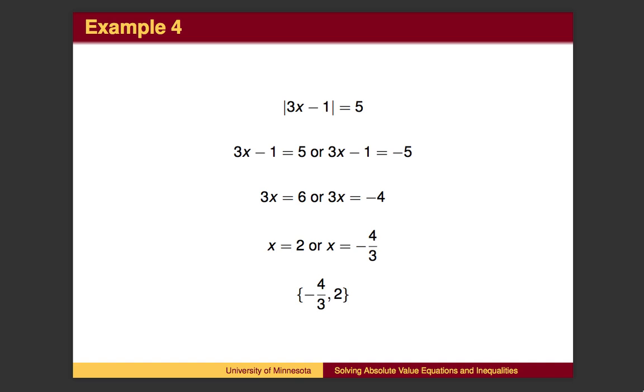This problem is similar. The thing inside the absolute value can either be 5 or negative 5. This leads to two equations. We add 1 to both sides, then divide by 3 to get the solutions.